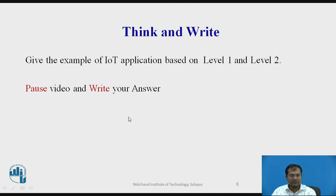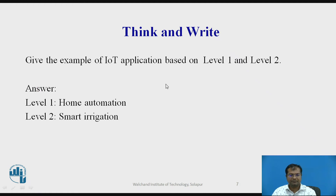Think about this question and write the answer: Give an example of an IoT application based on level 1 and level 2. Pause the video and write your answer. The answer is: IoT level 1 — home automation; IoT level 2 — smart irrigation.